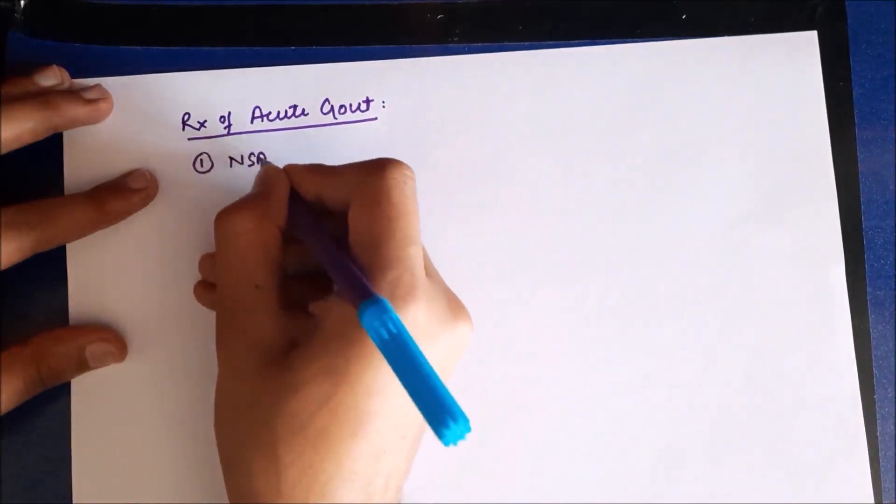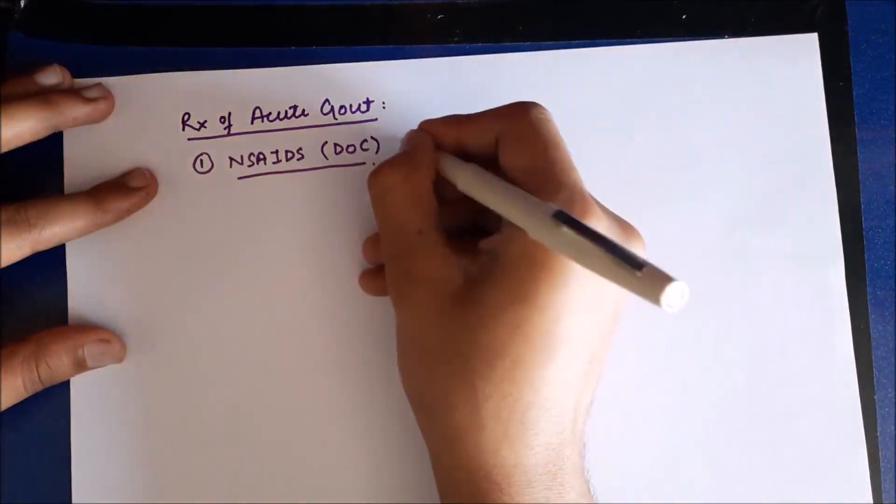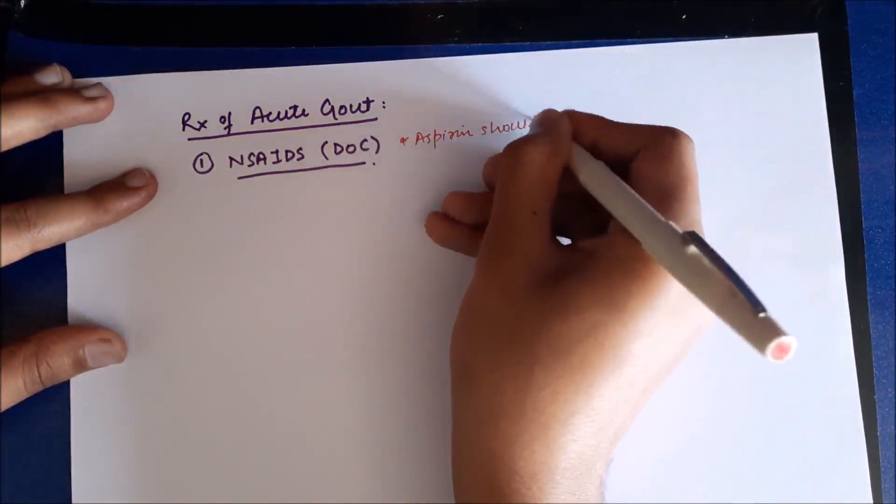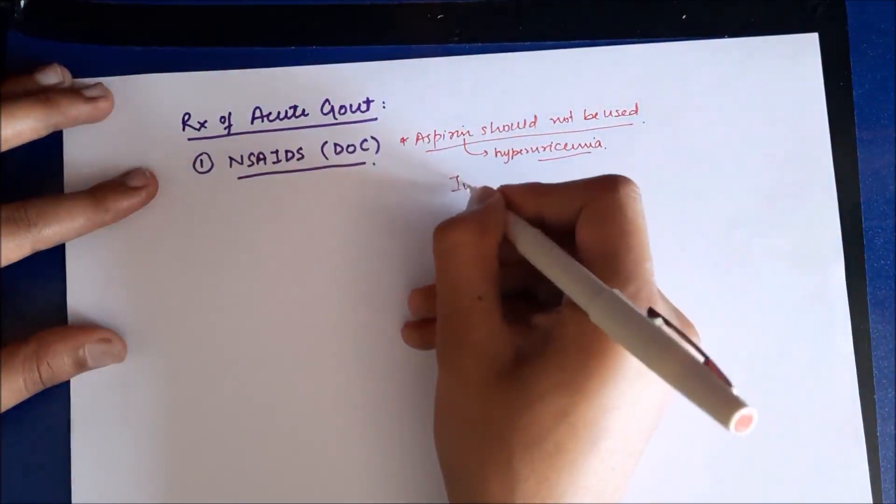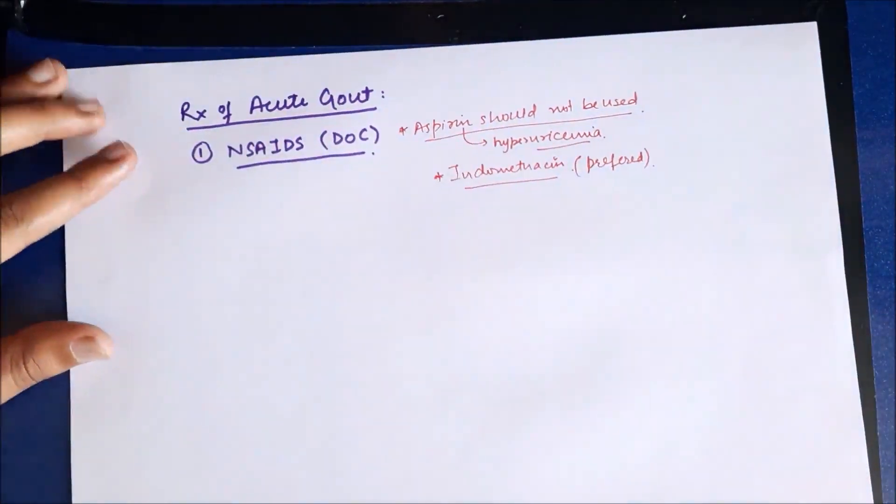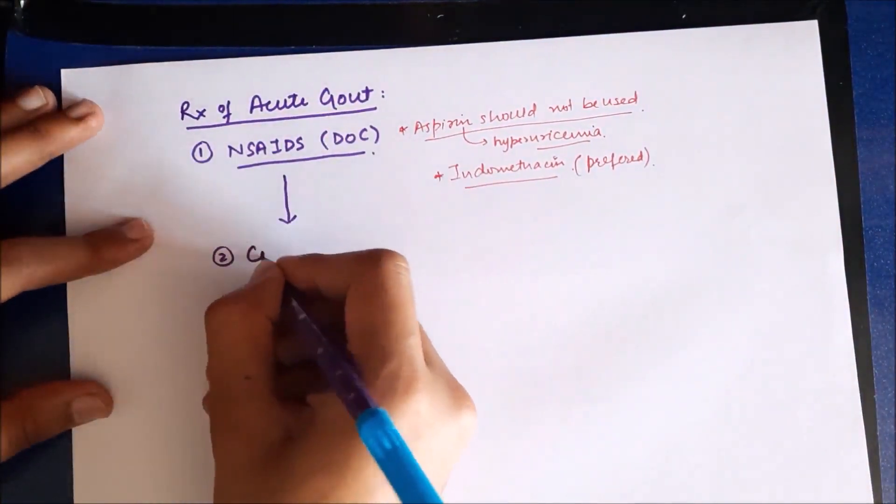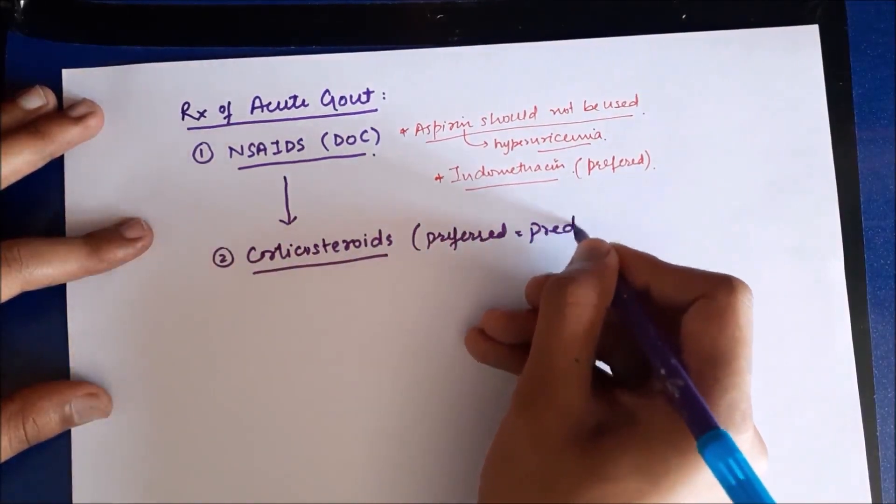So for the treatment of acute gout, our first drugs that we use are NSAIDs, which are also the drug of choice in acute gout. Now they are used because they decrease the inflammation, and aspirin should never be used because it itself causes hyperuricemia. Usually preferred NSAID is indomethacin. If the patient does not respond to these drugs, then we use corticosteroids, and the preferred corticosteroid is prednisolone.